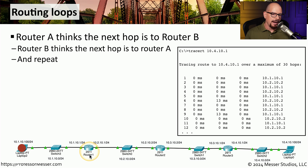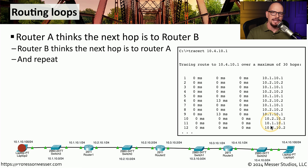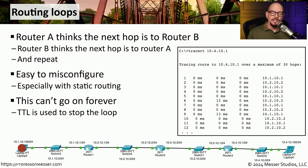A routing loop is a good example where router A thinks the next hop is router B, and router B thinks the next hop is router A. The packet goes back and forth between those routers over and over again. If you were to perform a trace route, you would see this loop — the route goes to 10.1.10.1, then 10.2.10.2, then back to 10.1.10.1, then back to 10.2.10.2, and so on — continuing until it reaches a time to live. This can occur because you might have many different routers with many different routes, making it very easy to make a single IP address mistake in a static route and create a routing loop. For routing loops, we use a TTL field inside of the IP packet itself, which allows us to identify and stop a loop automatically if one occurs.